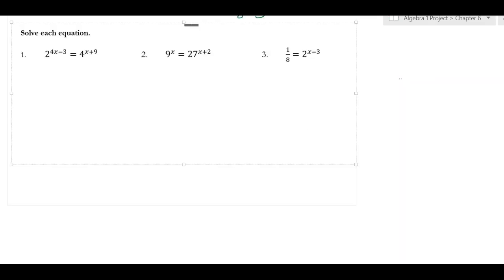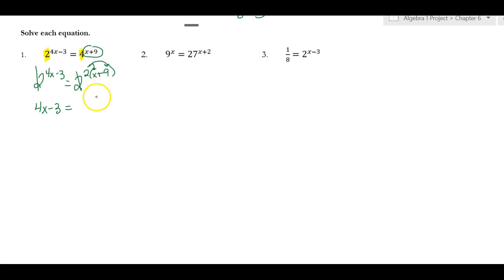We have three examples to go over here. Right now I have a base of 2 and 4, so I'm going to keep the 2 there, and the 4 needs to be 2 squared. So I write 2 squared, and I have to put it in parentheses because it's 2 squared to the x + 9. Now my equation is 4x - 3. I'm going to distribute this, so 2 times x is 2x and 2 times 9 is 18.